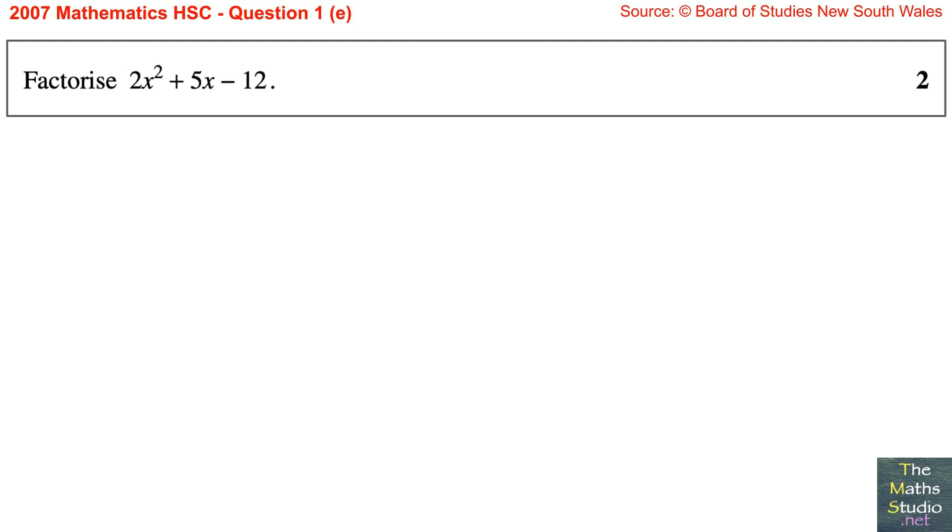Question 1, Part E. Factorize 2x squared plus 5x minus 12.